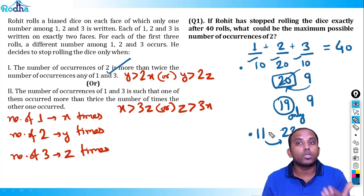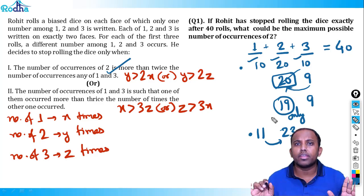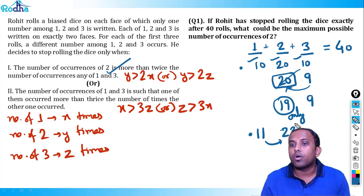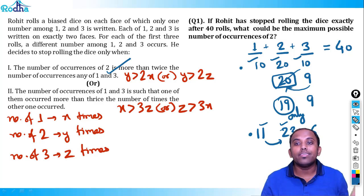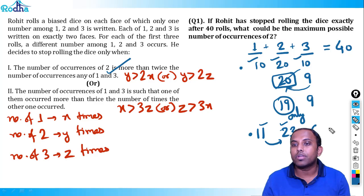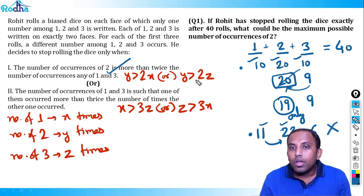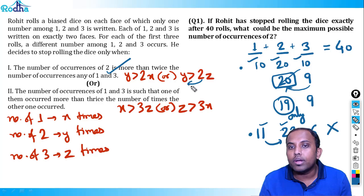Also note: by symmetry, since the condition is y > 2x or y > 2z, we could also have x = 9 and z = 12 with y = 19, giving 9 + 19 + 12 = 40. So we have two valid cases: (x=12, y=19, z=9) and (x=9, y=19, z=12). The answer to question 1 is 19.